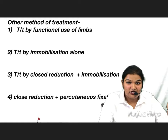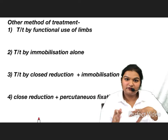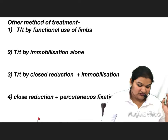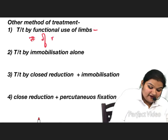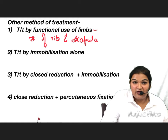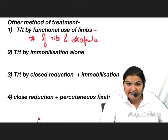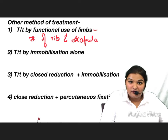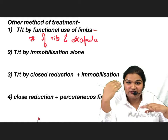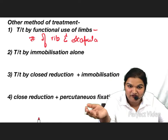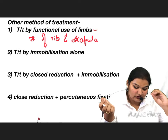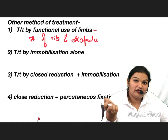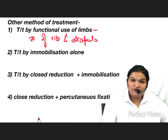One method is treatment by the functional use of the limb. Fractures of the ribs and scapula do not require immobilization — mere reduction, splinting, and analgesics are enough. Give the patient bed rest for a few days, then allow normal activity, and the fracture will heal. This is treatment by mobilization alone.